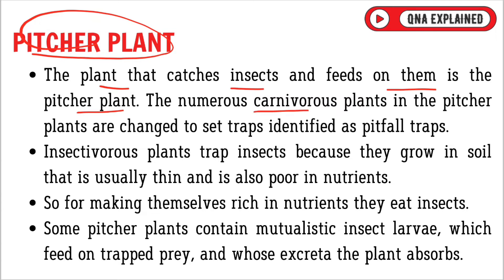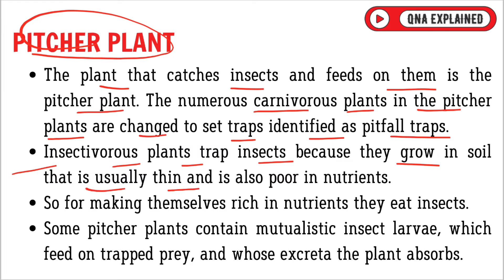The numerous carnivorous plants in the pitcher plants are changed to set traps identified as pitfall traps. Insectivorous plants trap insects because they grow in soil that is usually thin and poor in nutrients, so for making themselves rich in nutrients they eat insects.